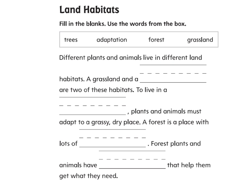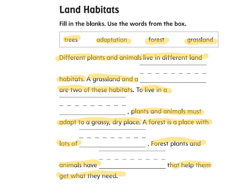Fill in the blanks — we have four words: trees, adaptation, forest, and grassland. They will only go in one spot, so it has to make sense. Different plants and animals live in different land habitats. A grassland and a something are two of these habitats. To live in a something, plants and animals must adapt to a grassy dry place. A forest is a place with lots of something. Forest plants and animals have something that help them get what they need. Read through it again to make sure it makes sense when you're done.